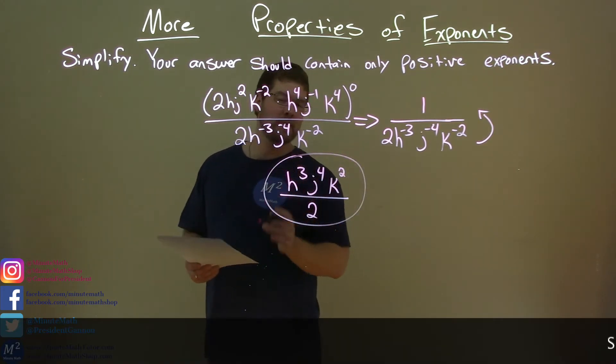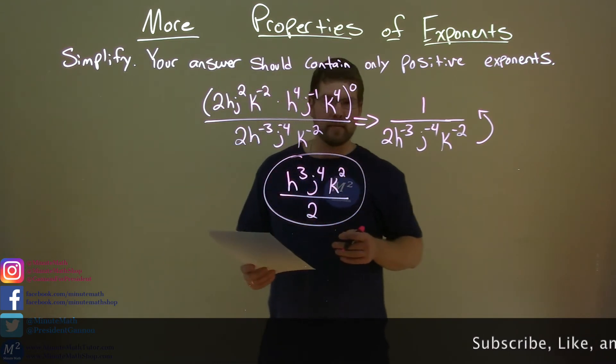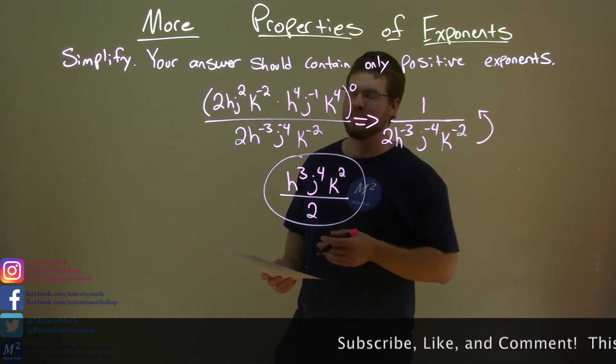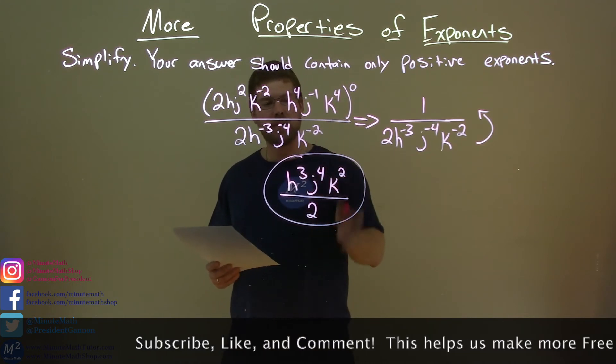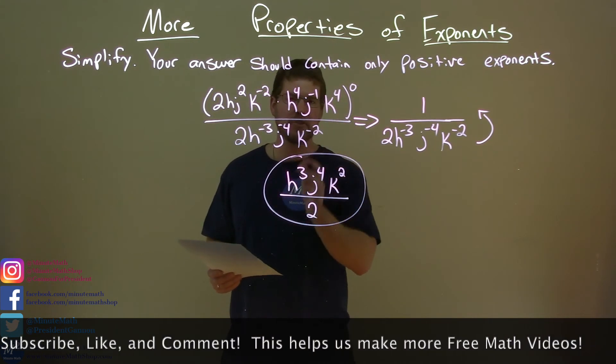Had you fooled for a moment, you thought that this was going to be a hard problem. You were scared, but now we're done. So, our final answer, h to the 3rd, j to the 4th, k to the 2nd power, all over 2, and we're done.